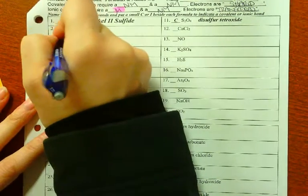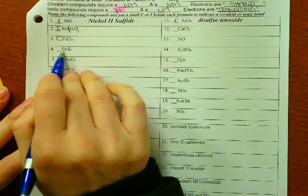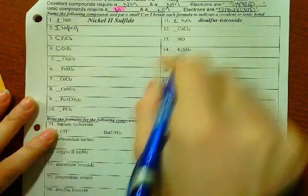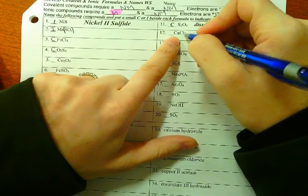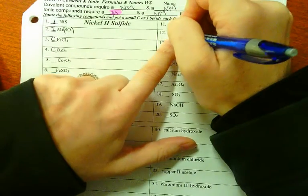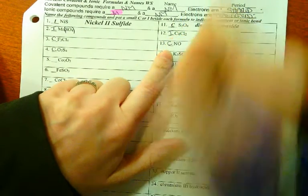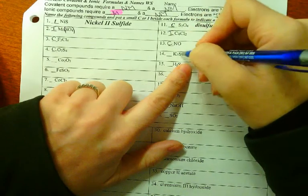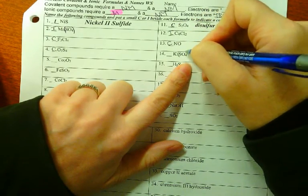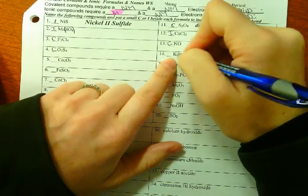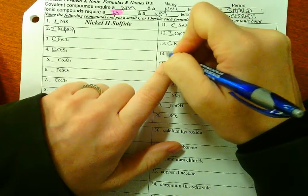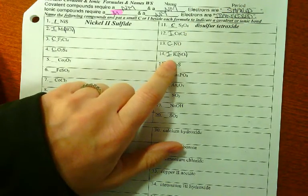I would recommend going through and doing ionic or covalent first. Fluorine, chlorine, those are covalent. Both nonmetals. Oxygen, sulfur, both nonmetals, covalent. Calcium, sulfur, and chlorine—that's ionic because calcium is a metal. Nitrogen, oxygen, both nonmetals, covalent. Potassium, sulfur, oxygen—that's a polyatomic. You should put those parentheses in. Potassium is metal, so that's ionic.